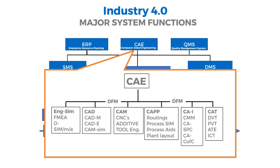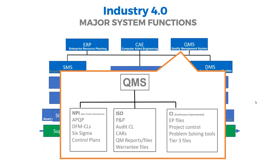The next box is QMS — quality management system. This is a fairly new addition to the understanding of Industry 4.0. We've had ISO for some time, but we need a much higher-end QMS environment. You also need a strong new product introduction environment to birth new products, including automated Six Sigma tools, and a strong continuous improvement environment so that as you move forward, you continuously build in an improvement mechanism. QMS should be part of Industry 4.0 and should be a high-end computerized environment.